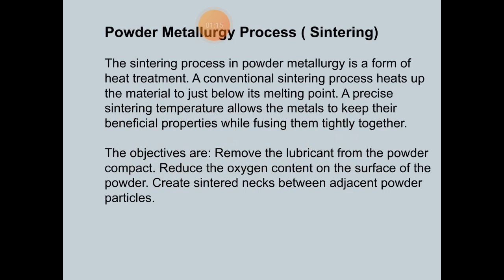The sintering process in powder metallurgy is a form of heat treatment. A conventional sintering process heats up the material to just below its melting point. A precise sintering temperature allows the metal to keep its beneficial properties while squeezing them tightly together. In the sintering fabrication of metal matrix composites, a powder of matrix metal is mixed with powder or dispersed phase in the form of particles or short fibers.